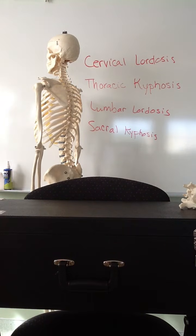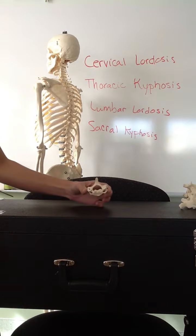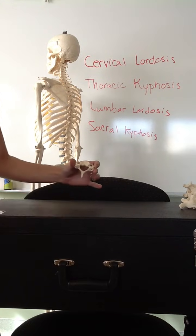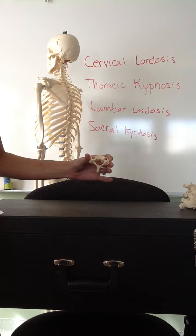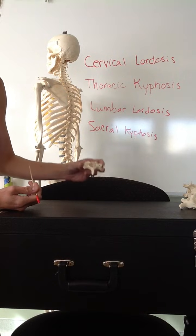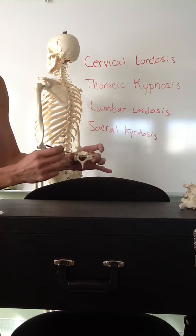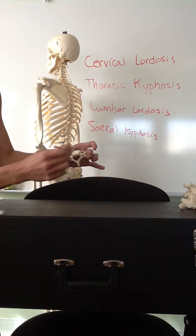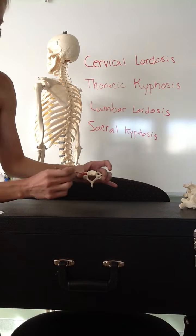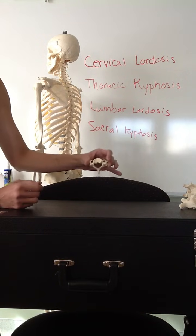We'll start by looking at the cervical vertebrae. The cervical vertebrae are the smallest of all the vertebrae, so the vertebral body is very small. Also, we can tell this is a cervical vertebra because it has these little holes on the side called the transverse foramen. The cervical vertebrae are the only vertebrae that have these transverse foramen, so right off the bat you can identify this as a cervical vertebra.